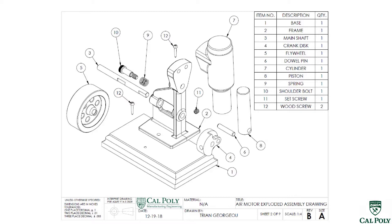Six of them are parts we manufactured. The other seven parts are standard purchase parts that we purchased off McMaster-Carr, MSC, wherever we get the best price. That's going to be how the assembly of the air motor works — it takes 13 parts to go together. You're going to see from this exploded assembly view where every part goes in this air motor assembly.